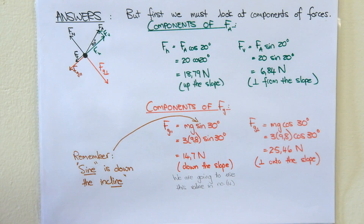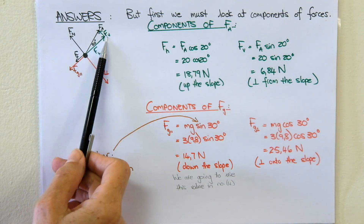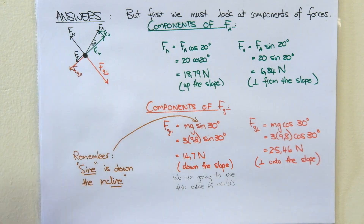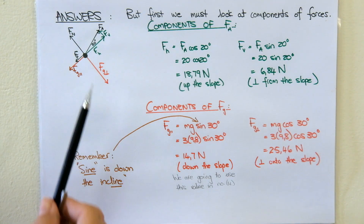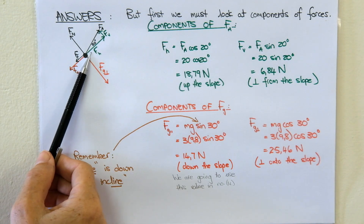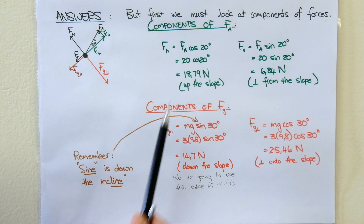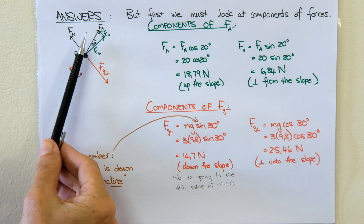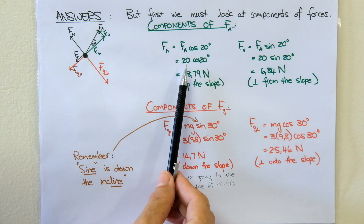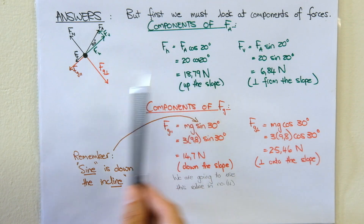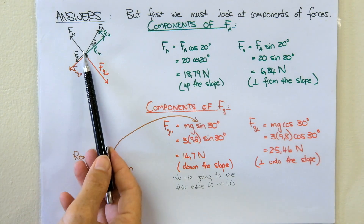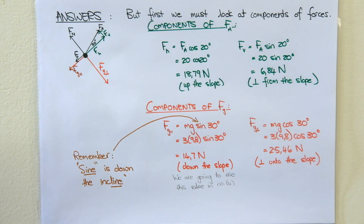Let's look at the applied force components. You are working in this triangle — that's your angle, the adjacent side, the opposite side, and Fa is your hypotenuse. The applied force is 20 newtons. The component acting up the slope is 20 times cos of 20, because cosine is adjacent over hypotenuse, giving 18.79 newtons up the slope. That is the force pulling the three kilogram box up the slope, but we have two forces acting in the opposite direction which we will discuss later.